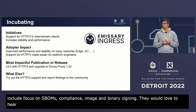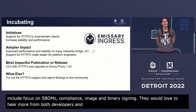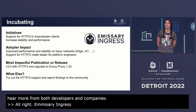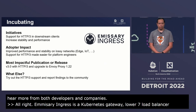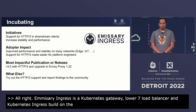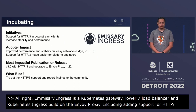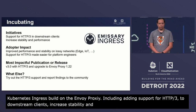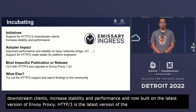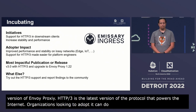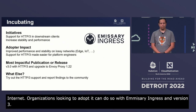Emissary Ingress is an open source Kubernetes-native API gateway, layer 7 load balancer, and Kubernetes ingress built on Envoy Proxy. Recent initiatives include adding support for HTTP/3 to downstream clients, increased stability and performance, and the project is now built on the latest version of Envoy Proxy. HTTP/3 is the latest version of the protocol that powers the internet, so organizations aiming to adopt HTTP/3 can do so with Emissary Ingress.